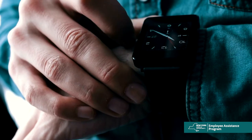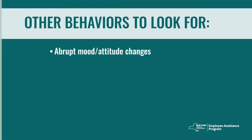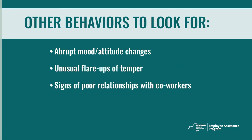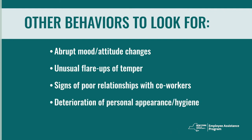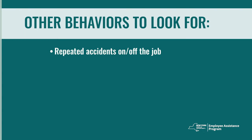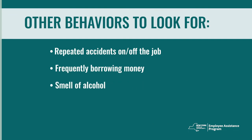While on the job, does the employee seem distracted, exhibiting inconsistent work patterns or unacceptable behavior? Is the employee making uncharacteristic errors in judgment or missing deadlines? Is the employee frequently late or absent? Other behaviors to look for include: abrupt changes in mood or attitude, unusual flare-ups of temper, signs of poor relationships with coworkers, a deterioration of personal appearance and hygiene, reports of repeated or unusual accidents on or off the job, frequently borrowing money from other employees, and the smell of alcohol.